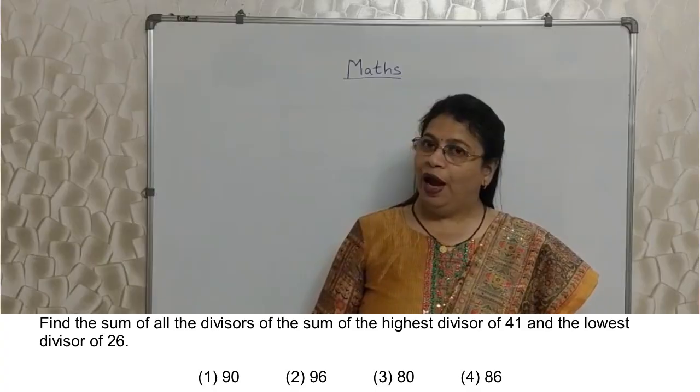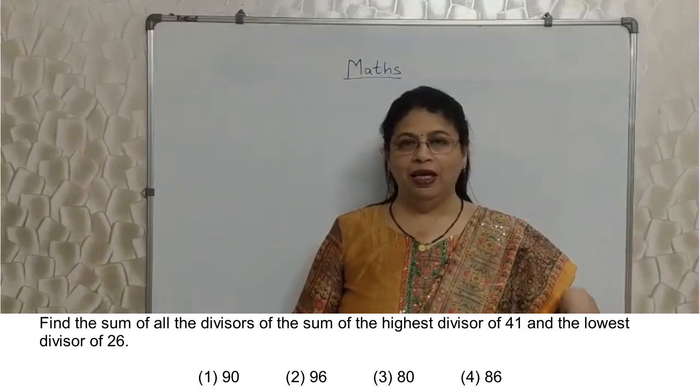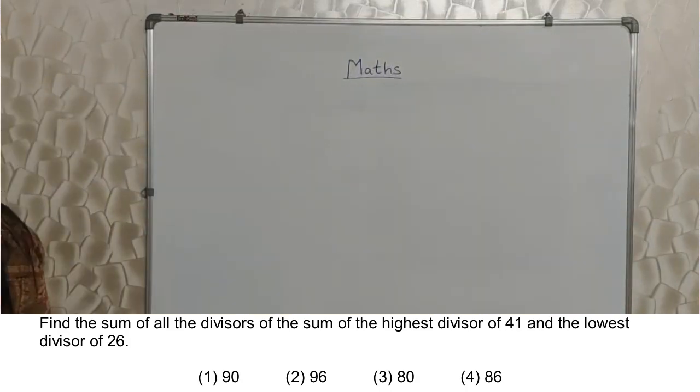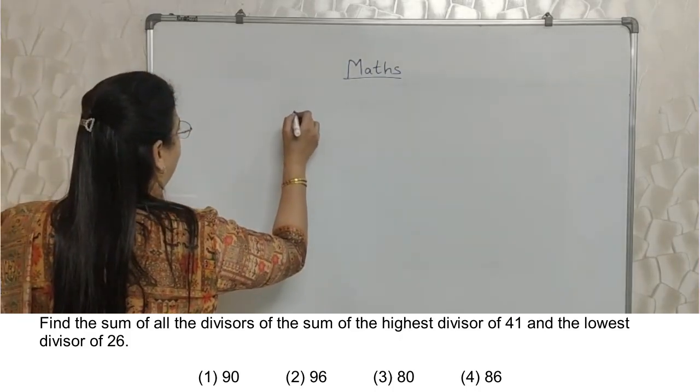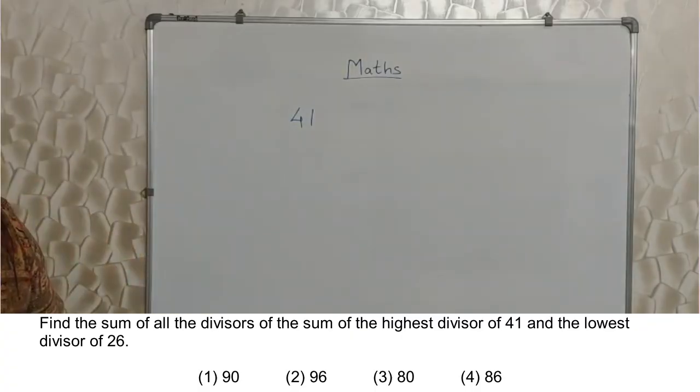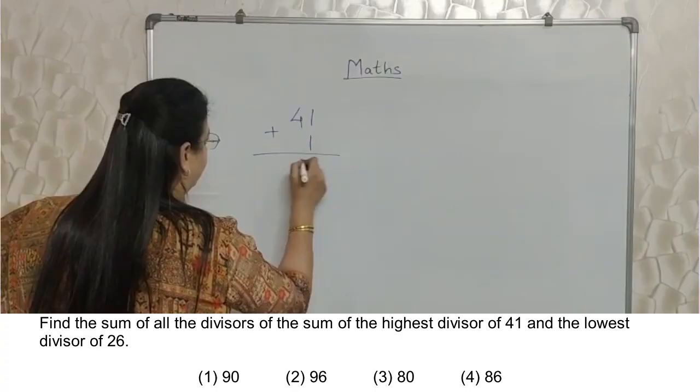If you know this fact, then your work is done. Two marks definitely in your pocket. What is the sum of highest divisor of 41? Highest divisor of 41 will be 41. And lowest divisor of 26 will be 1. Their addition is 42.